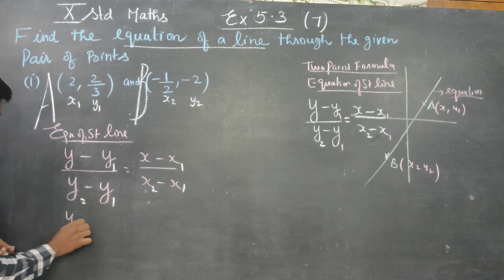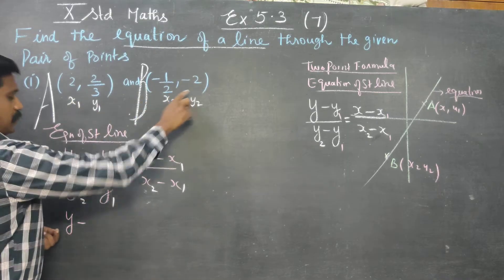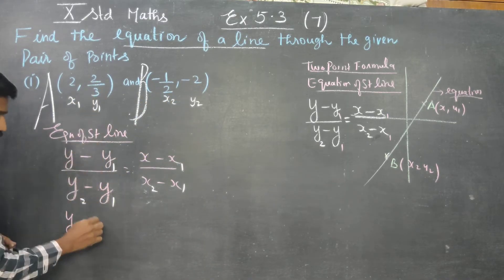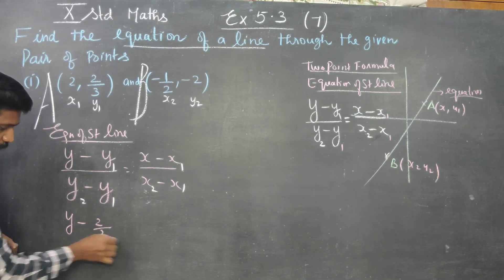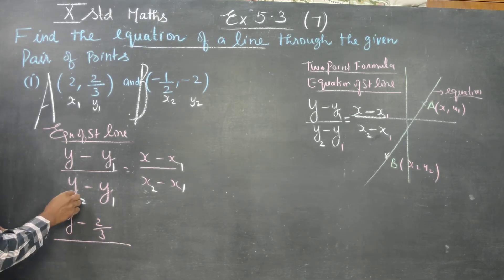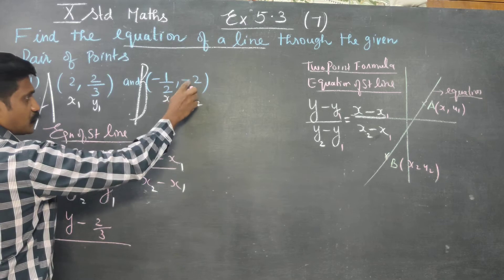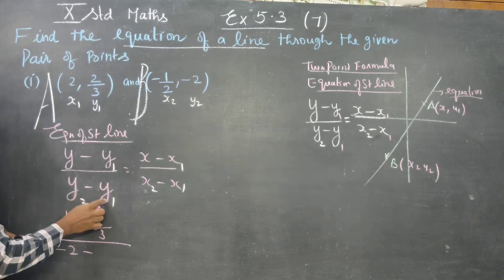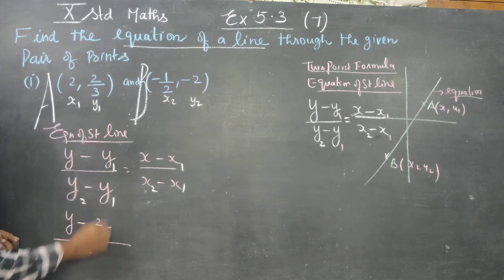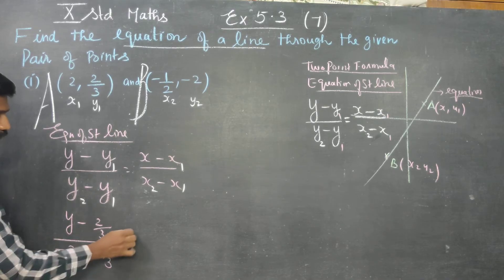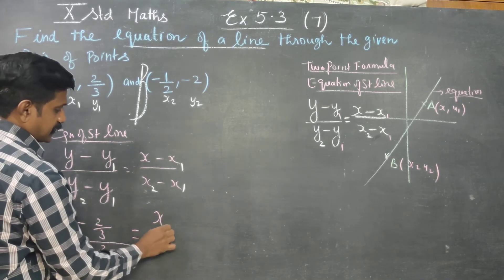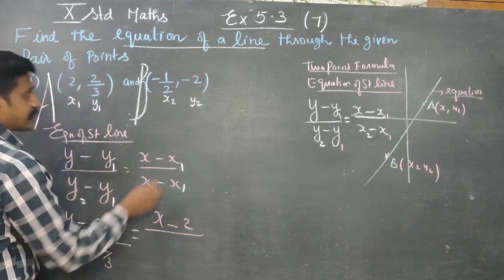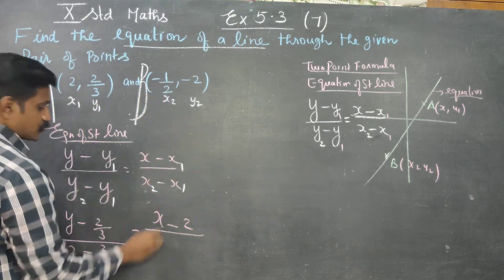Substituting into the formula: y minus y1, where y1 is 2/3, y2 is minus 2, divided by y2 minus y1. x minus x1, where x1 is 2, x2 is minus 1/2.